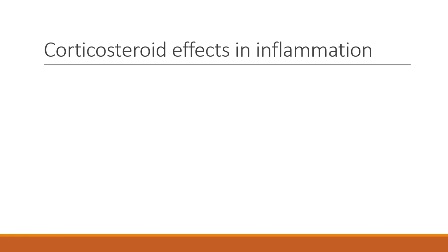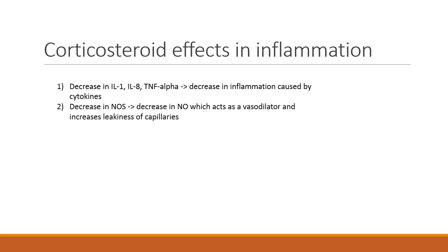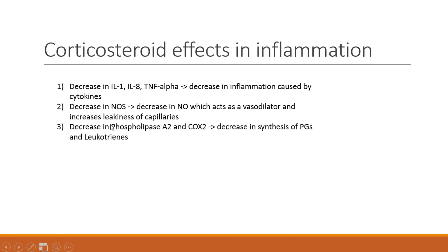If we look at the effects of glucocorticoids on inflammation, there are five major things that occur. First, we get a decrease in pro-inflammatory cytokines such as interleukin-1, interleukin-8, and tumor necrosis factor alpha. Second, we get a decrease in nitric oxide synthase — this leads to a decrease in nitric oxide, which acts as a vasodilator and increases the leakiness of capillaries. By reducing vasodilation and leakiness, we decrease inflammation. Third, we get a decrease in phospholipase A2 and COX-2 — an inducible enzyme stimulated by pro-inflammatory cytokines — reducing the synthesis of prostaglandins and leukotrienes, which are pro-inflammatory.